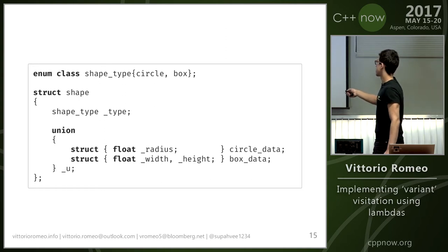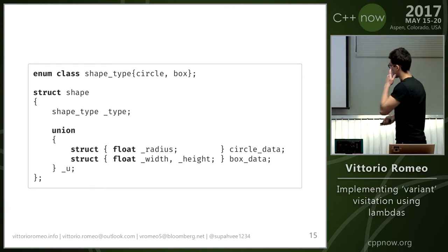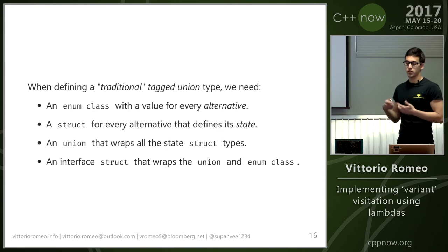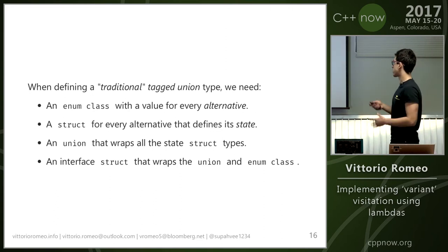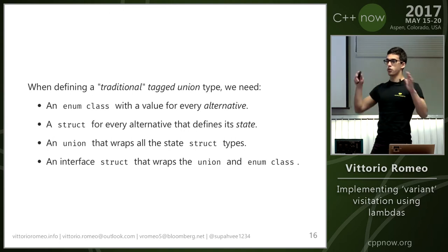Let's start with a traditional tagged union. You need an enum class to discriminate between circle and box — I'll call this shape_type. Then you need a struct called shape which contains the discriminator and a union of the types: circle data has just a radius, and box data has width and height, all wrapped in a union. As you can see, we need boilerplate for the enum class, a struct for each alternative, a union that wraps all the alternatives, and another struct that packages everything together.